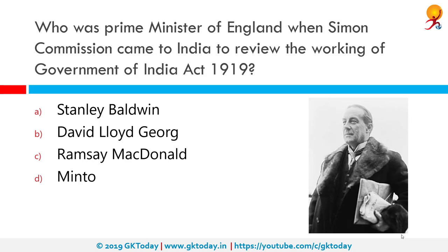Who was Prime Minister of England when the Simon Commission came to India to review the working of the Government of India Act 1919? The correct answer is Stanley Baldwin. Stanley Baldwin was a British Conservative Party statesman who dominated the government of the United Kingdom between the world wars, serving as Prime Minister on three occasions.